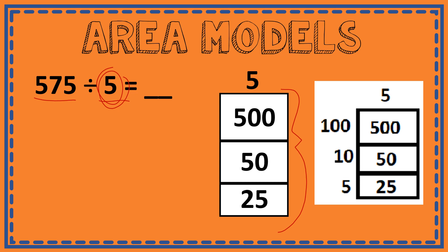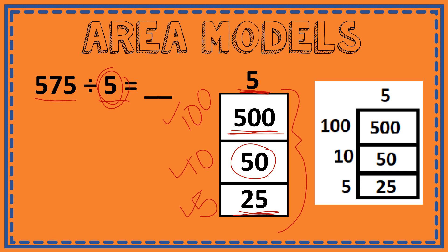Your divisor, your 5, is at the top, and it's division by taking the dividend and breaking it into easier parts so that the divisor can divide more easily. So 500 divided by 5 is 100, 50 divided by 5 is 10, and 25 divided by 5 is 5. Now these numbers to the left — those are my answers — so I'm going to add them together to get 115. And 115 is my quotient, my final answer.